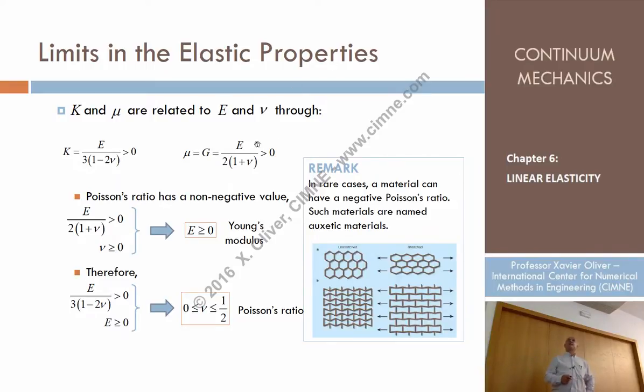We can also extract more conditions. Now we have that K, which is greater than zero, can be expressed in terms of E and nu. And mu, which is the shear modulus, can be expressed in terms of E and nu. Let's see what are the consequences when both K and mu are positive.